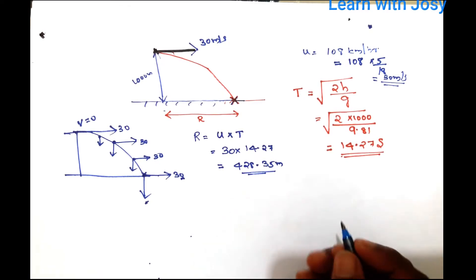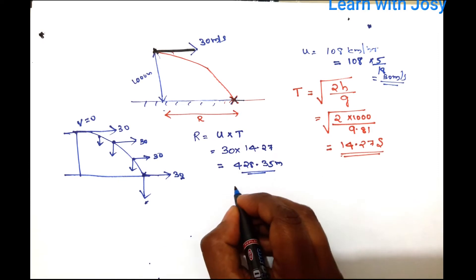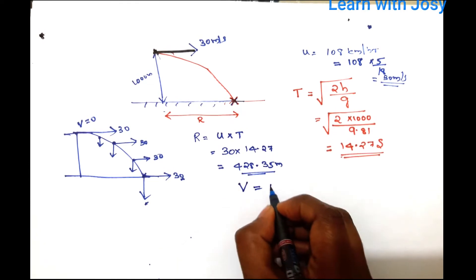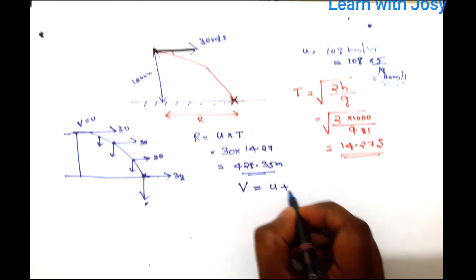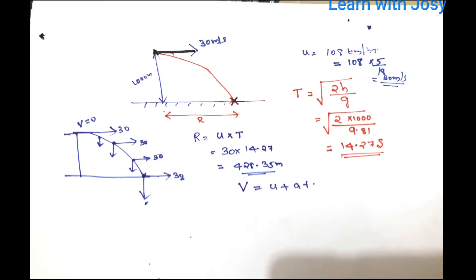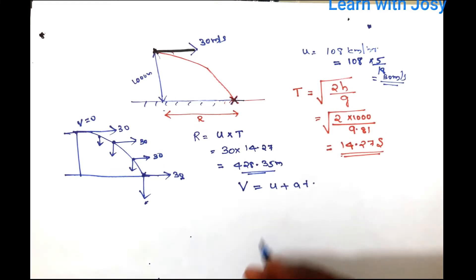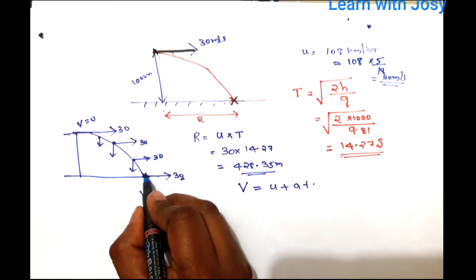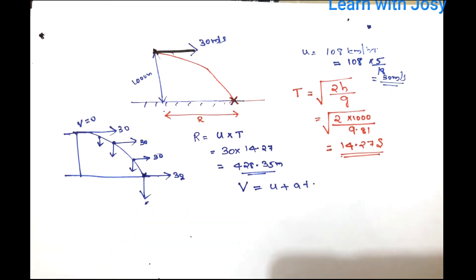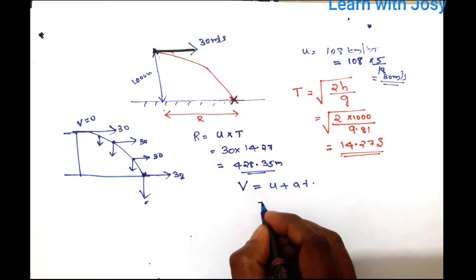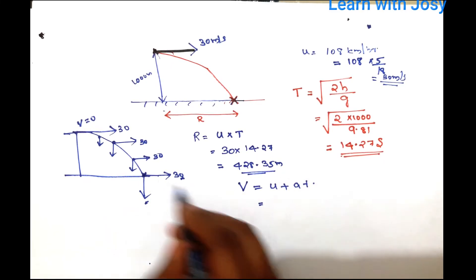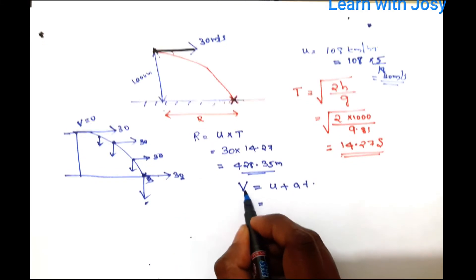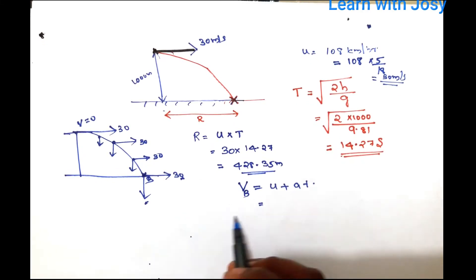We will use the equation of motion: v = u + at. Applying this to find the vertical velocity at impact. The vertical velocity increases as the bomb falls.